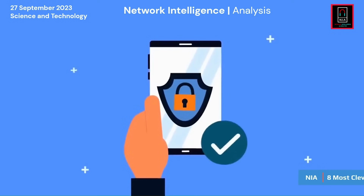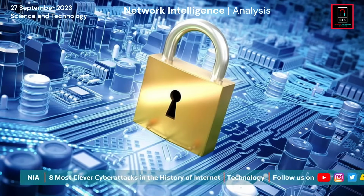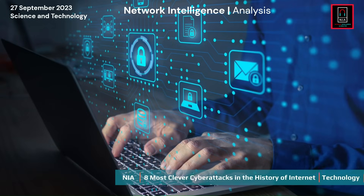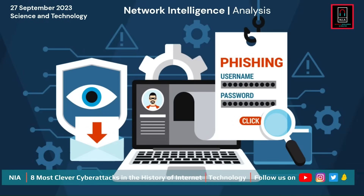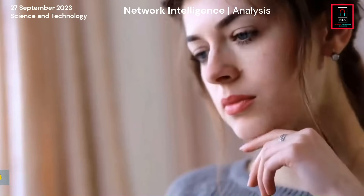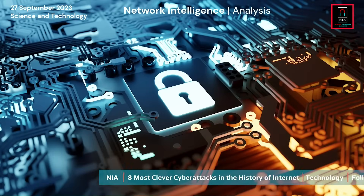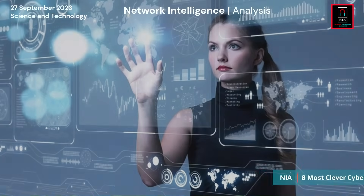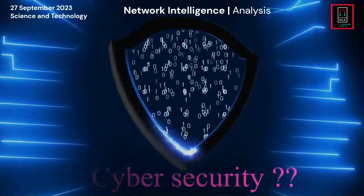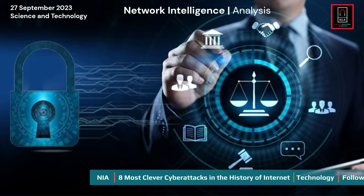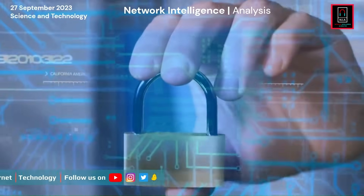Cybersecurity Laws in the United States. There are three main federal cybersecurity regulations. Number 1: Health Insurance Portability and Accountability Act (HIPAA) — enacted to control and modernize the flow of medical and healthcare information. Number 2: Gramm-Leach-Bliley Act 1999 — made it mandatory for financial institutions to explain their information-sharing practices to customers and safeguard sensitive data. Number 3: Homeland Security Act 2002 — included the Federal Information Security Management Act (FISMA), which recognizes the importance of information security to the economic and national security interests of the United States.